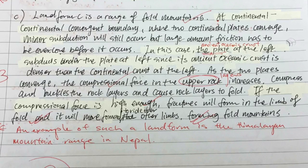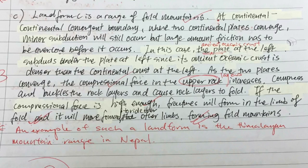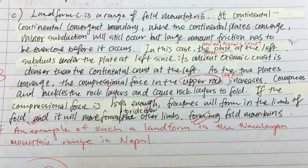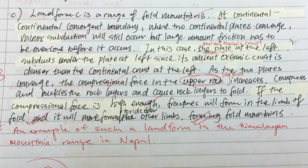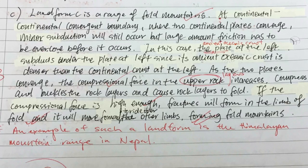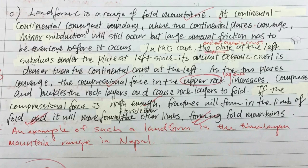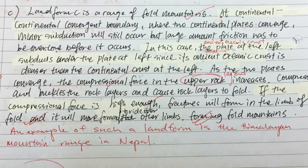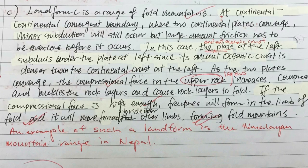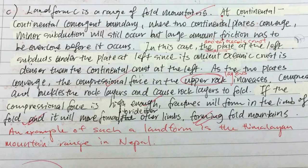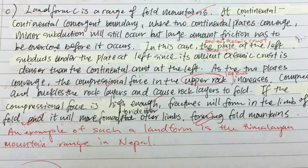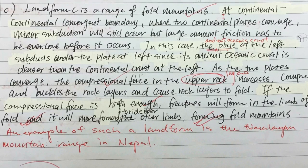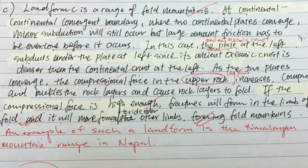Similarly, please pause the video to take a look at the candidate's answer first. This candidate's answer is almost complete with only some very minor errors. The key thing the candidate missed is the fact that the ancient oceanic crust is the one that subducts, not the continental crust. There is also use of generic terms instead of specific geographical terms. And missing out on an example of a fold mountain range — because this is a five-mark question, an expectation is there for you to name a real-life example.